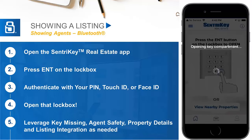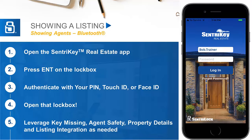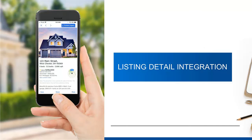Once you have authenticated, you should be able to open the lockbox and commence your showing. If needed, the app does offer the functionality to notify the listing agent if the key is missing. If enabled, it also features the ability to stay safe at listings through our Agent Safety feature. After clicking Continue, CenturyKey will also provide you the basic listing details with access to view the property details in a listing detail app such as RPR or HomeSnap. This is an optional feature, and all additional features can be set up in the app using the triple bar at the top left.